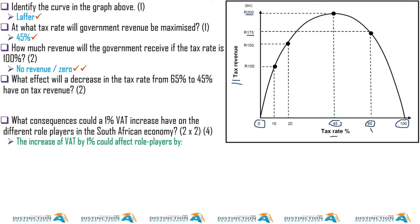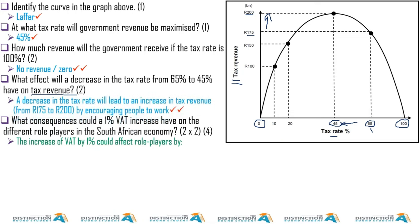What effect will a decrease in the tax rate from 65% to 45% have on tax revenue? If tax rate was 65% and it's reduced to 45%, look what would happen—revenue would go up. Tax revenue would go up from 175 billion to 200 billion. It's as simple as that.